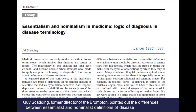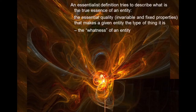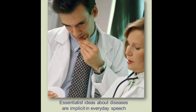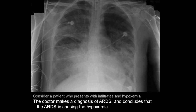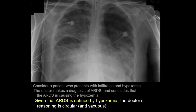Guy Scadding, former director of the Brompton in London, pointed out the differences between essentialist and nominalist definitions of disease — a controversy that extends back to the days of St. Anselm and Peter Abelard. An essentialist definition tries to describe the true essence of an entity: the essential quality, invariable and fixed properties that make a given entity the type of thing that it is — in other words, the 'whatness' of an entity. Essentialist ideas about diseases are implicit in everyday speech. Consider a patient who presents with infiltrates and hypoxemia; the doctor makes a diagnosis of ARDS and concludes that ARDS is causing the hypoxemia. Given that ARDS is defined by hypoxemia, the doctor's reasoning is circular and vacuous.